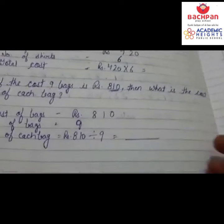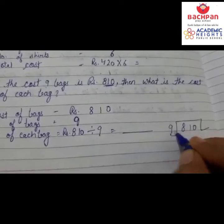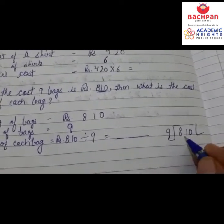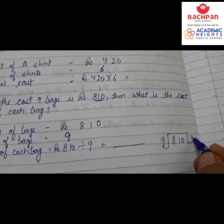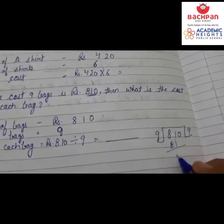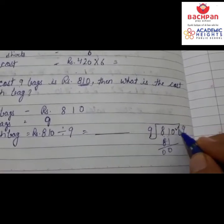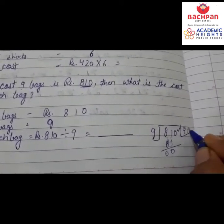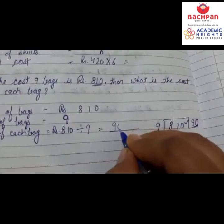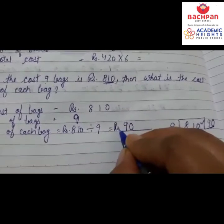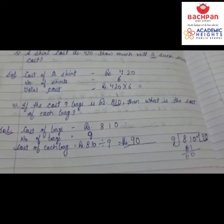Now we solve the division. We need to take two digits because the first digit is smaller than nine. From the nine times table, 9 × 9 = 81, so 81 goes here and remainder is 00. The zero left over is written with the answer, so our answer is 90. Rupees 90 is the cost of each bag. Do practice, thank you!